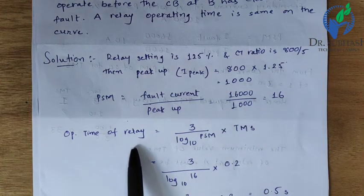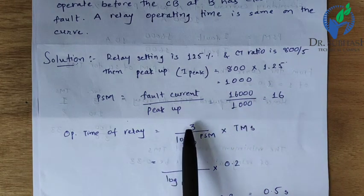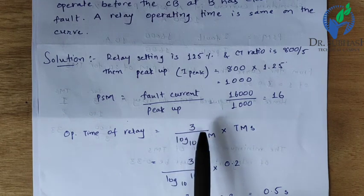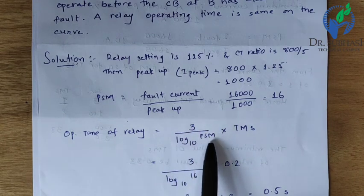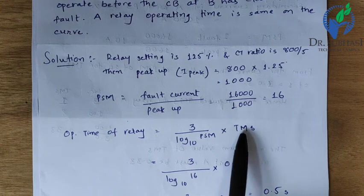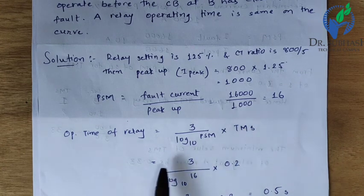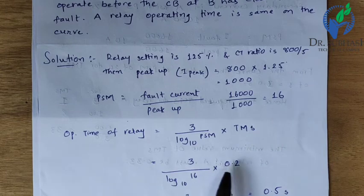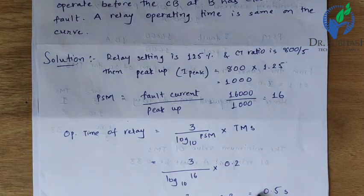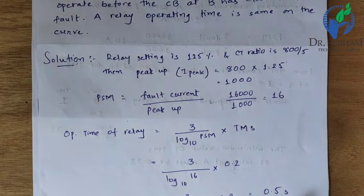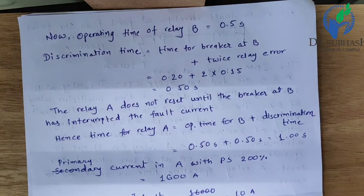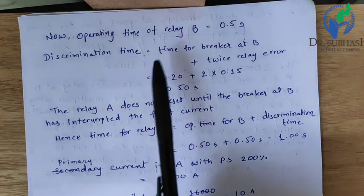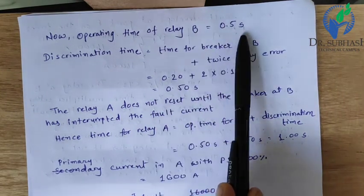Operating time of relay B is calculated using the equation: T = 3 / (log10(PSM)) × TMS. Substituting PSM = 16 and TMS = 0.2 gives an operating time of 0.5 seconds. So relay B operating time is 0.5 seconds.